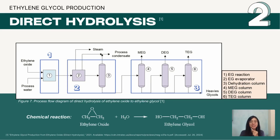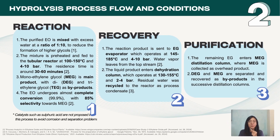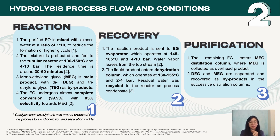The second reaction is direct hydrolysis of ethylene oxide to ethylene glycol, also known as monoethylene glycol, with the proposed process shown in the flow diagram. Firstly, the purified ethylene oxide from the previous process is mixed with excess water in the ratio of 1 to 10 to reduce formation of higher glycols.